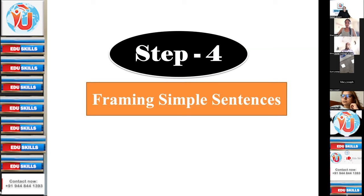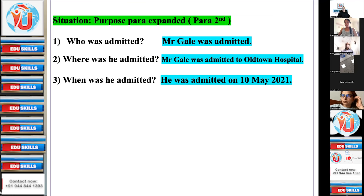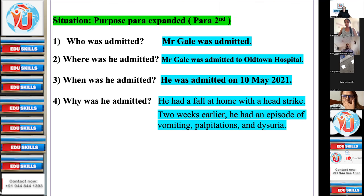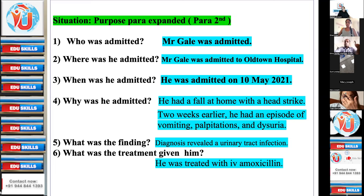Step four: framing simple sentences. Simple sentences for each of the questions — just one simple sentence per question. Who was admitted? Mr. Gale was admitted. Where? Mr. Gale was admitted to Old Town Hospital. When? He was admitted on 10th May 2021. Why? He had a fall at home with a head strike. Two weeks earlier he had an episode of vomiting, palpitations, and dysuria. What was the finding? Diagnosis revealed a UTI. What was the treatment? He was treated with IV amoxicillin.